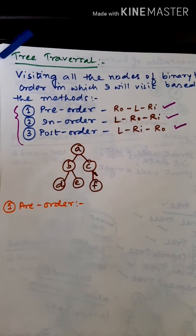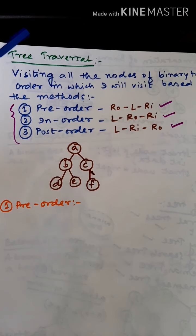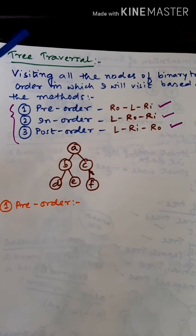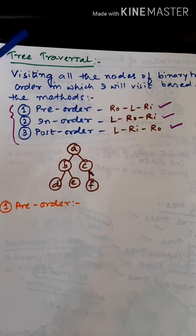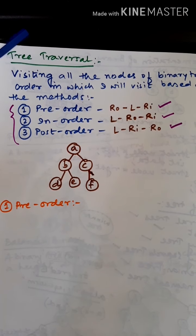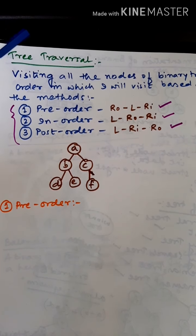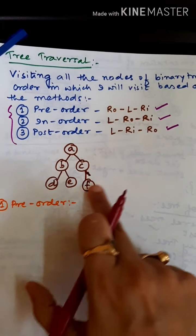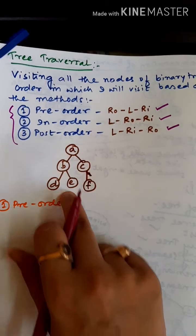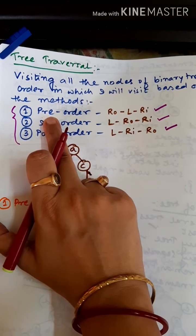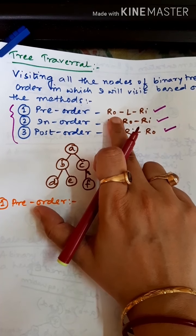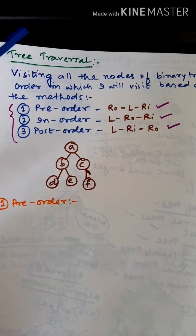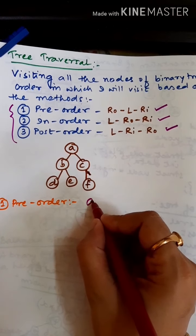Now let's take an example and try to traverse a tree through these three methods. A binary tree has three parts: the root, the left subtree, and the right subtree. Suppose I have a tree as an example. In pre-order traversal, the root is visited first, then the left subtree, then the right subtree. For this example, if I visit the root first, my root will be A.